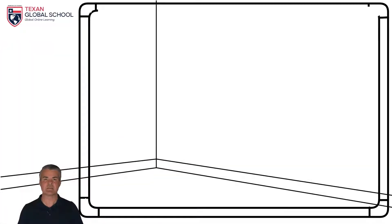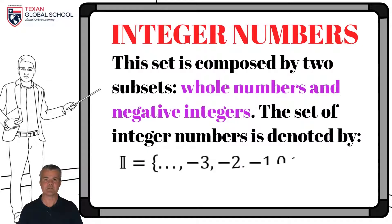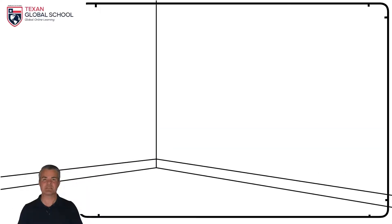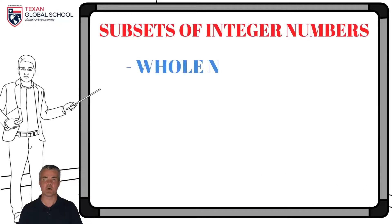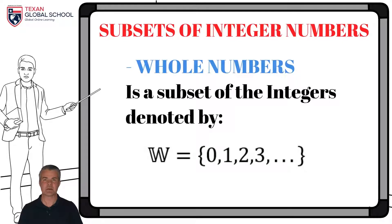On the other hand, the set of integers is formed by whole numbers and negative integers. This set is denoted by the letter I. The elements are shown in the set notation. As a subset of the integers, the whole numbers are represented by the letter W. Its elements are zero, one, two, three, extending towards positive infinity, maintaining that sequence.